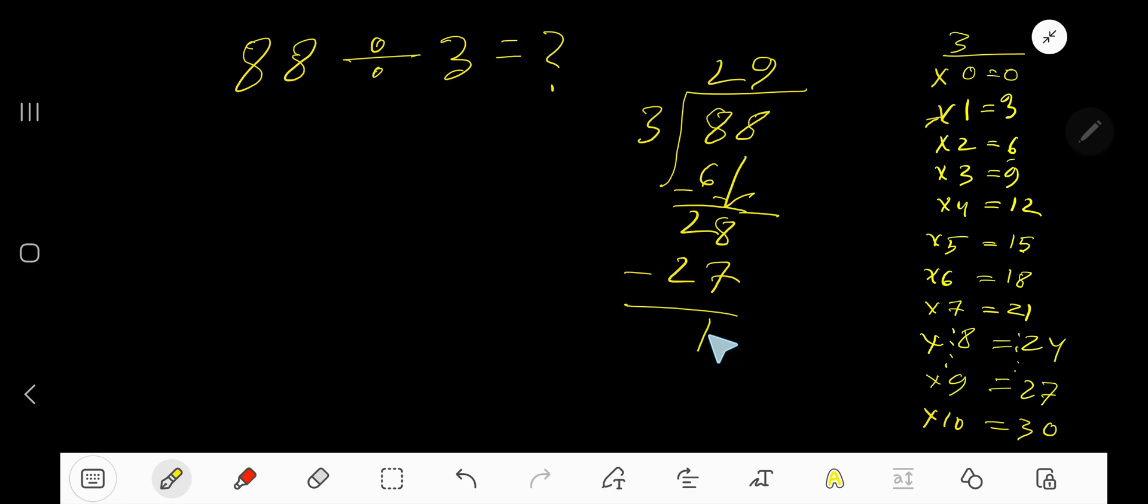This 1 is your remainder as it is less than the divisor, so our answer is 29 remainder 1. But if you want to write your answer in decimal form, then take your decimal.